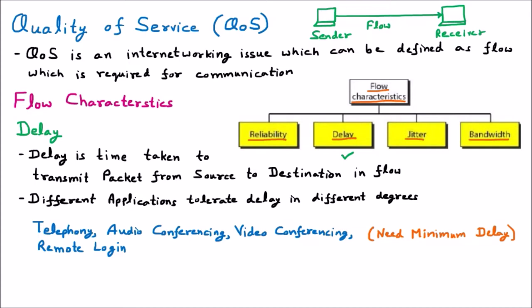If I am speaking on audio conferencing or telephone, there should be minimum delay, because if the other person gets my words after 10 minutes, that is obviously not a conversation. Same with remote login — if commands are not reaching my system on time, it is not a good system. So in these applications, delay should be minimum. But some applications like file transfer and email do not need minimum delay.